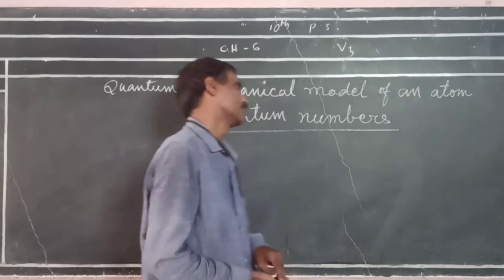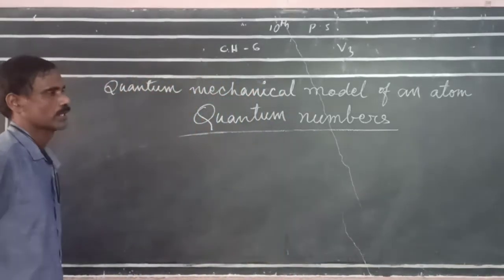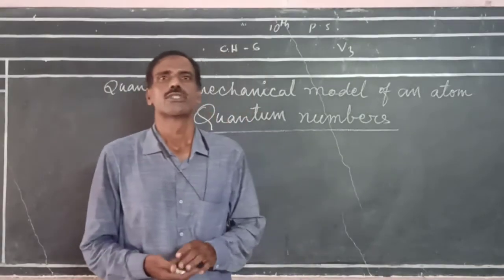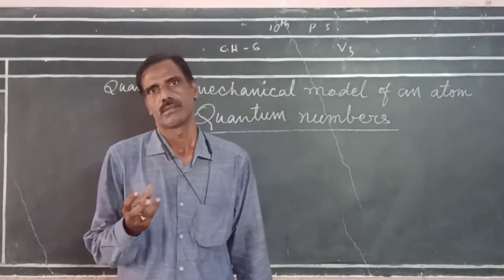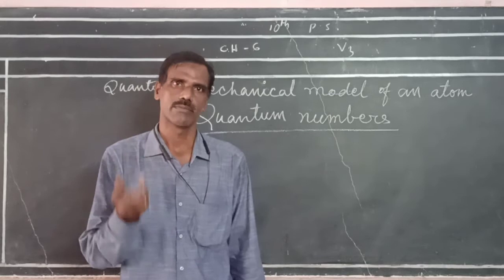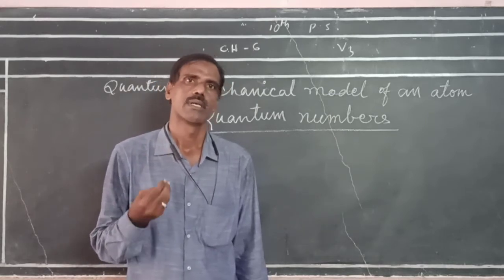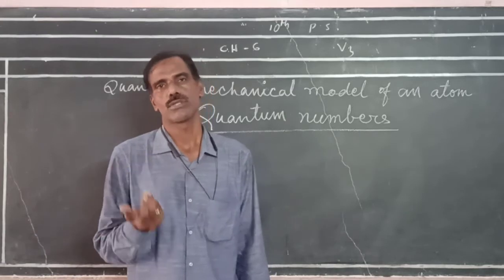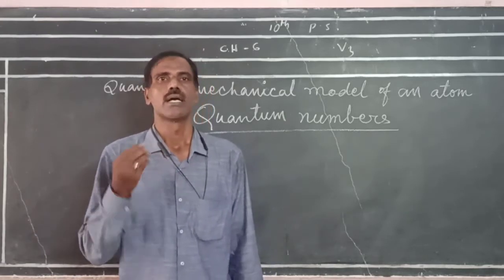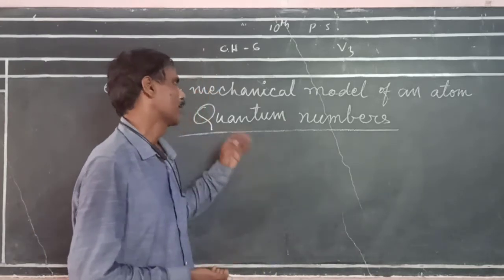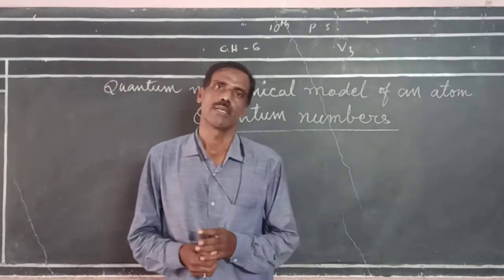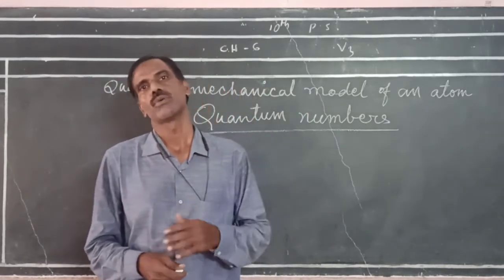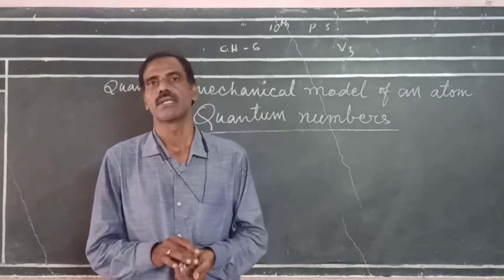Now, we are going to discuss quantum numbers. How big or how small an atom is, and different characteristics of the atom, are described by quantum numbers. Different quantum numbers show different characteristics of the atom.